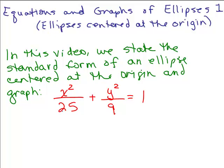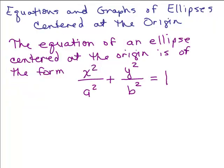In this video we graph an ellipse. We're going to go over the basics of ellipses — not everything about how they're defined necessarily, but just about their equations and their graphs. The equation of an ellipse centered at the origin is of the form x squared over a squared plus y squared over b squared equals 1. Now, a and b are just numbers and they can't be zero.